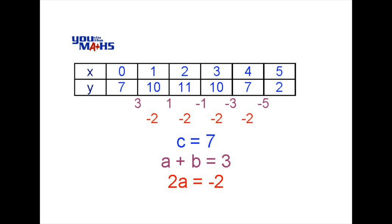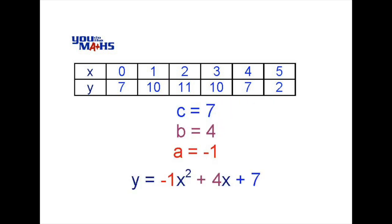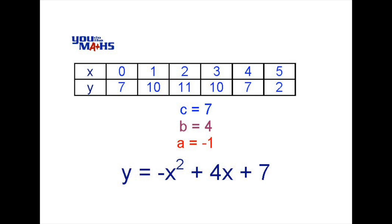Now let's match those equations. We can see c equals 7, a plus b equals 3, and 2a equals negative 2. It's easiest to solve the last equation first, giving a equals negative 1. We then substitute that into the second equation and find that b equals 4. So our final quadratic equation from that table is y equals negative x squared plus 4x plus 7.